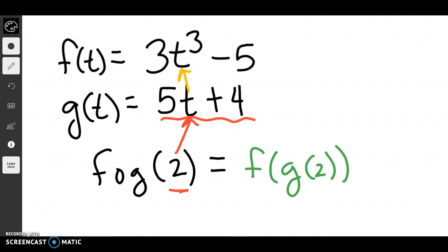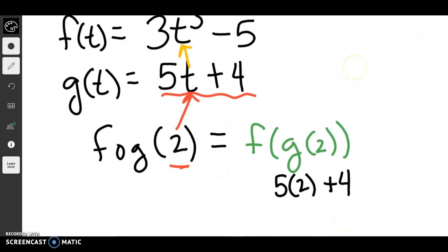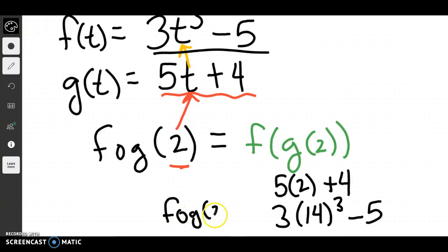I'm going to plug 2 in for g. And g of 2 would be 5 times 2 plus 4, which we can do pretty easily, and that would be 14. And then I want to plug 14 now into this f function. So let's rewrite that as 3 times 14 to the third minus 5, which then this would be f of g of 2. Again, I just took 2, plugged it into there, evaluated that, and found that that was 14. And now we're going to plug it into f of t.